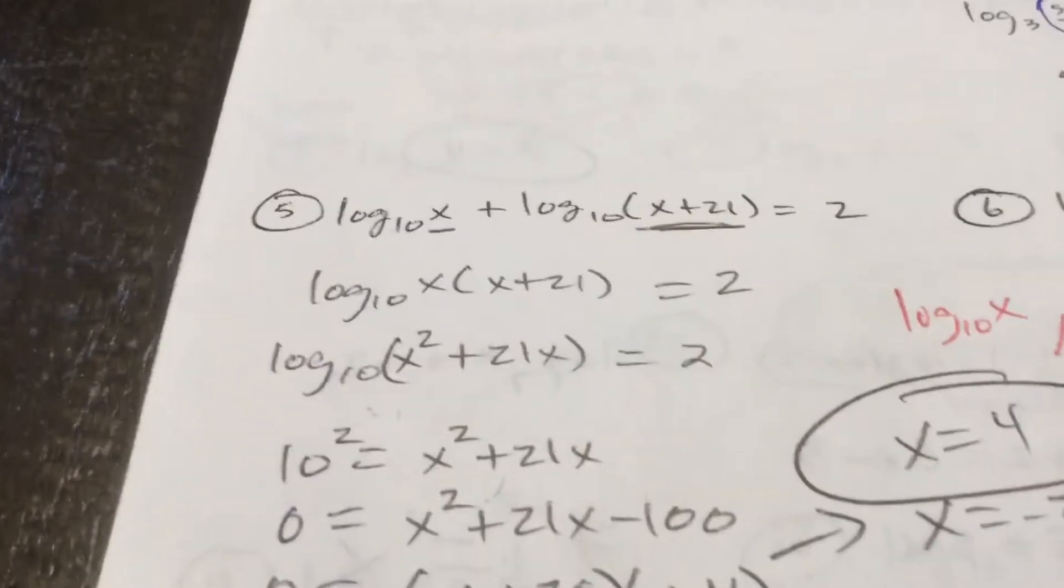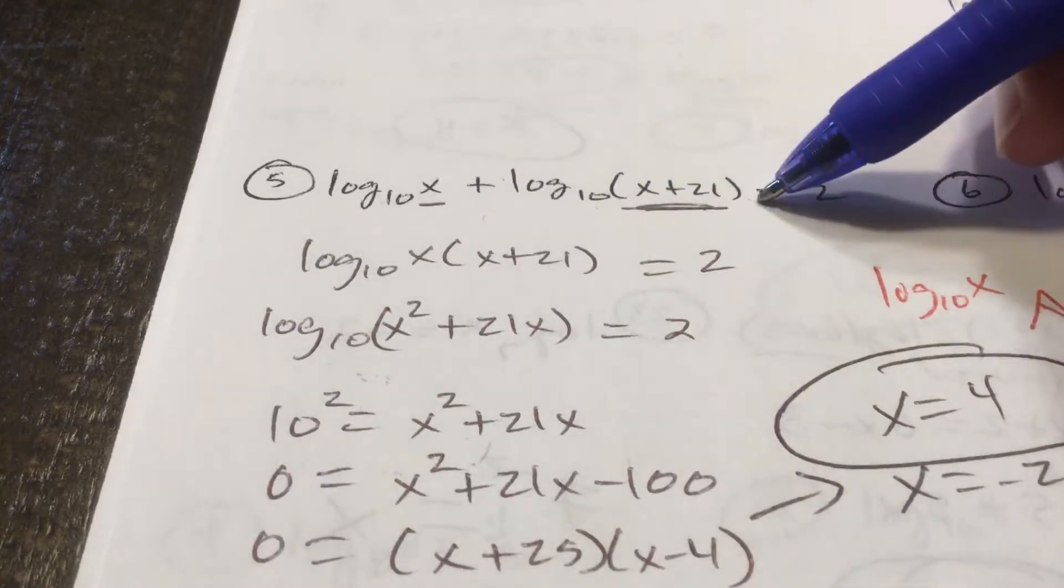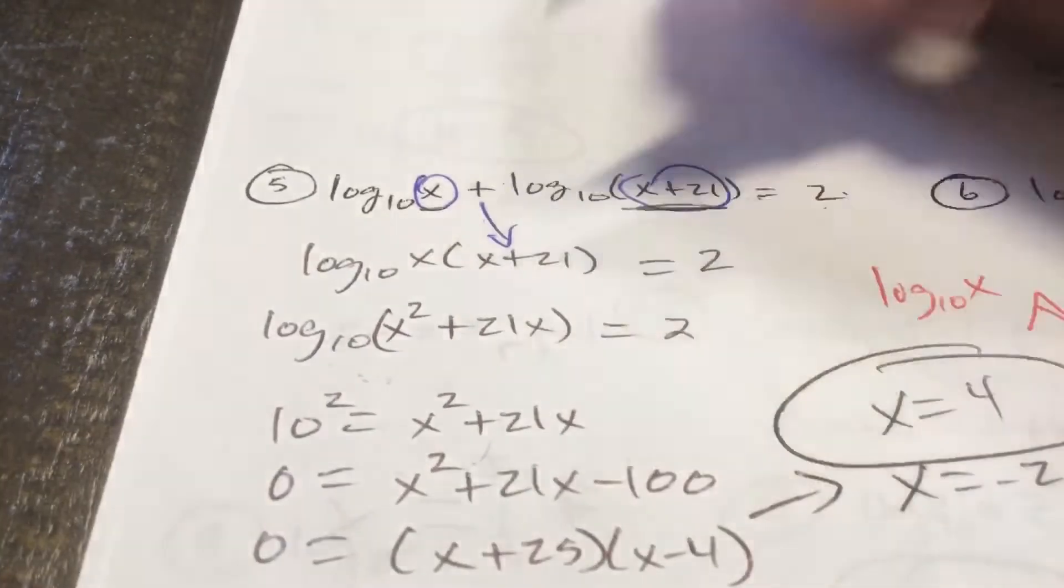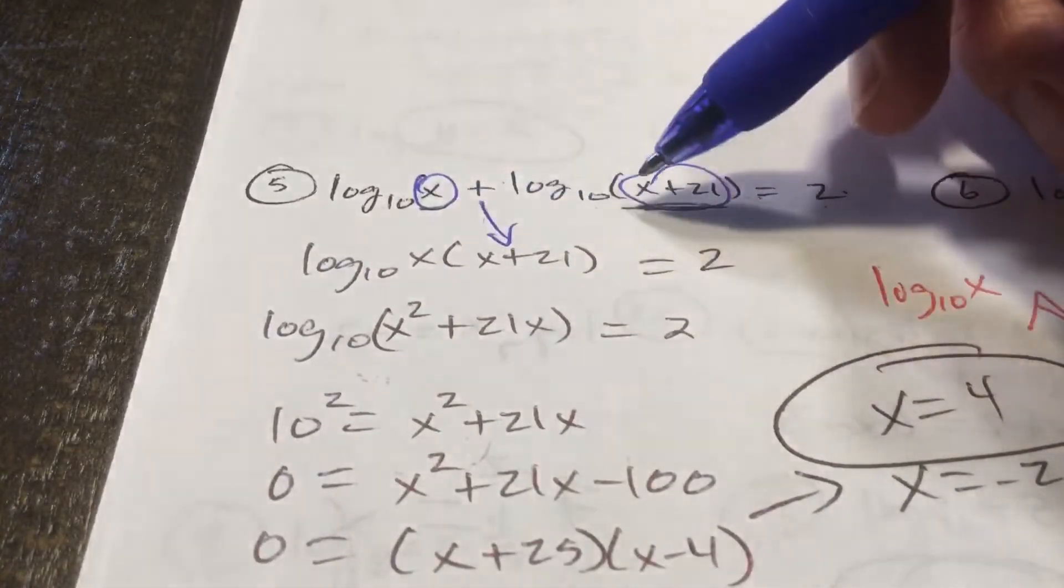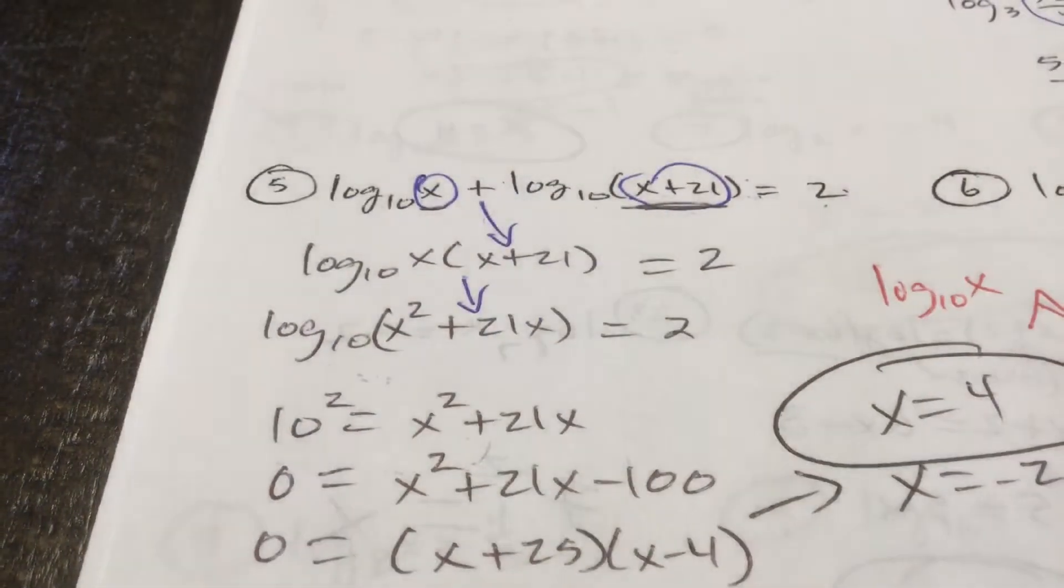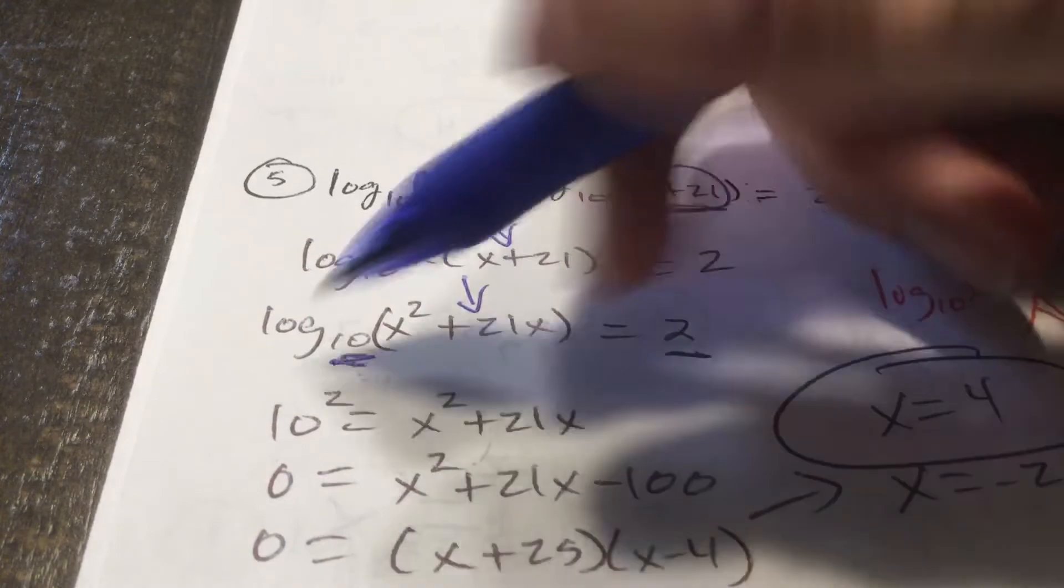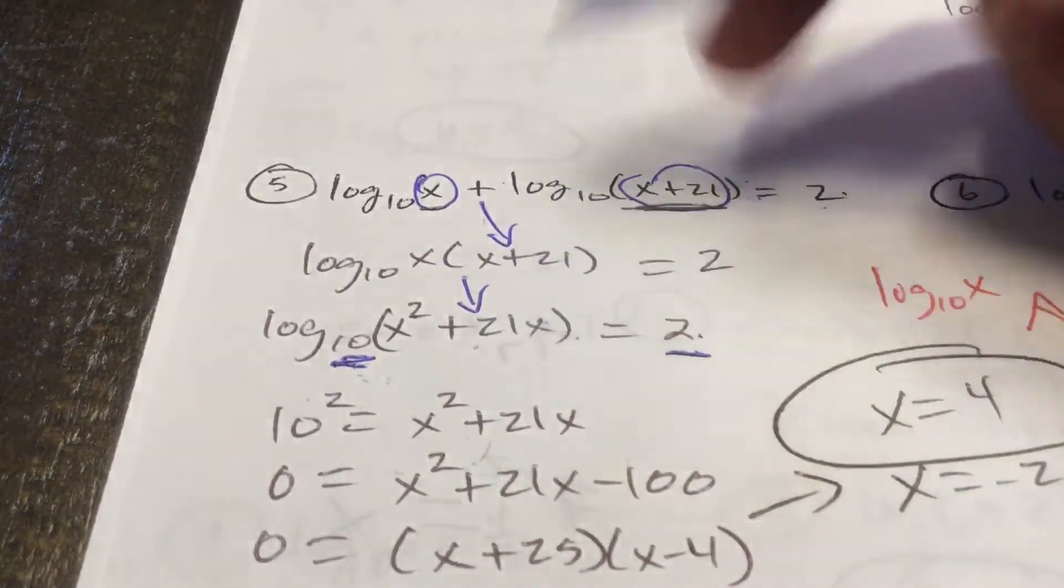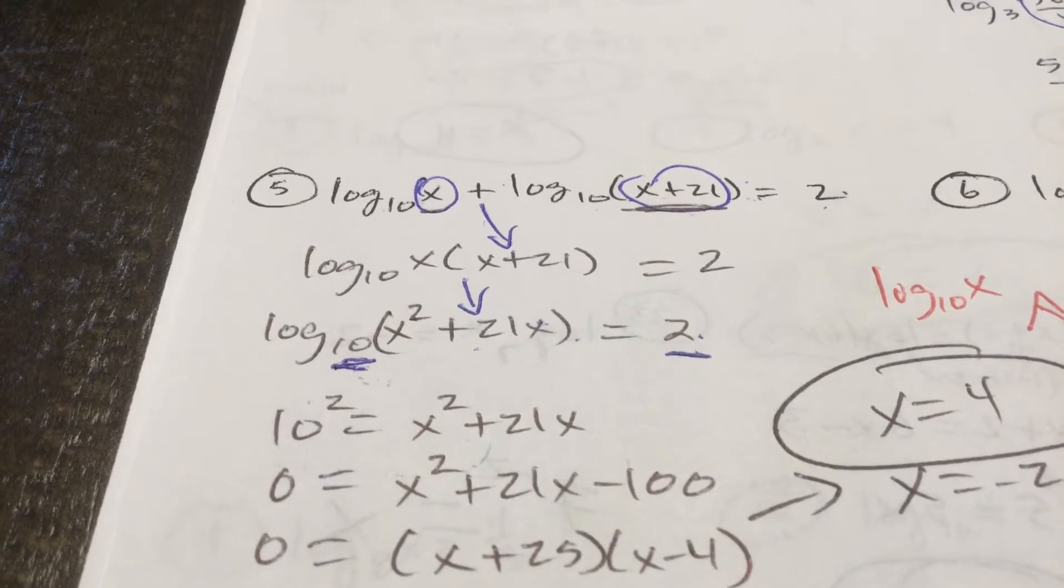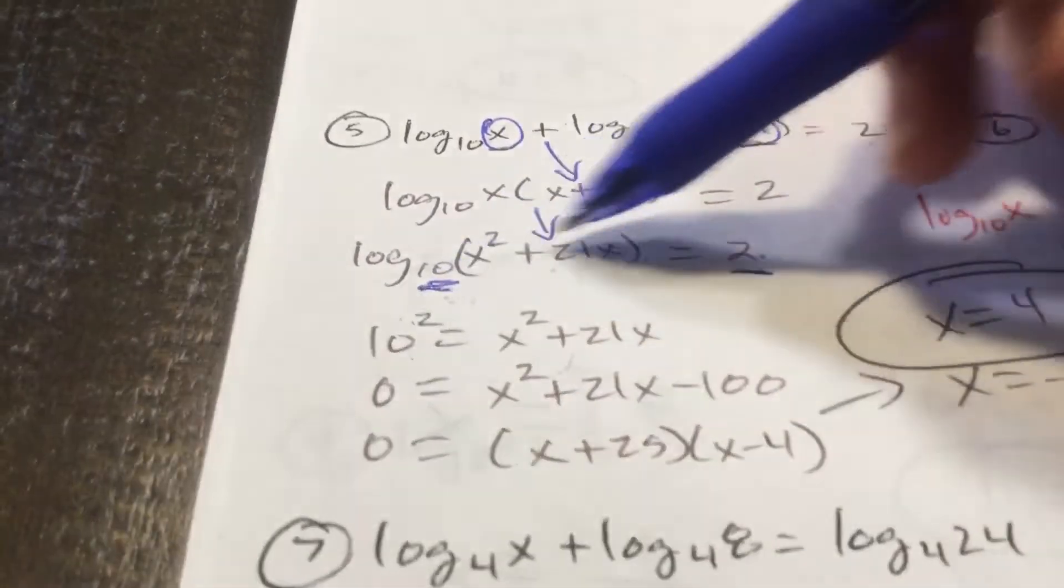Then, take a look at 5. Now, I technically don't need base 10 there. That is implied. But log base 10 of x plus log base 10 of x plus 21 equals 2. I'm going to combine these two logs again. Addition means multiplication in the log world. It's going to be log base 10 of x times x plus 21, which is x squared plus 21x. Again, this is the base. This is the exponent. That's my answer. 10 squared equals x squared plus 21x. Again, pause this. Write this down several times. Folks, you're going to have to kind of teach yourself some things too.